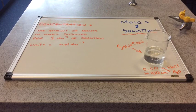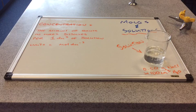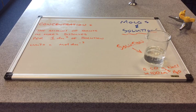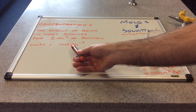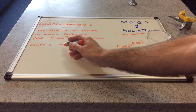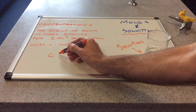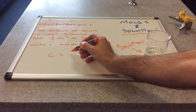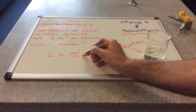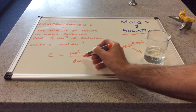On the left I've defined the term concentration: that is the amount of solute in moles dissolved per one decimetre cubed of solution. The units of concentration are moles per decimetre cubed. From these units we can tell that the concentration C equals the number of moles per decimetre cubed.